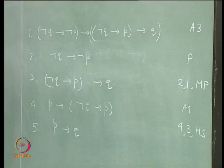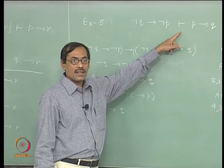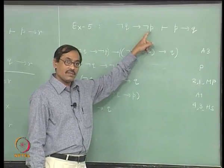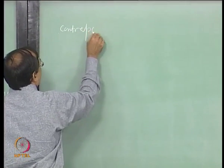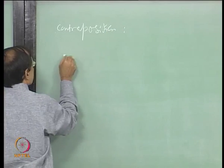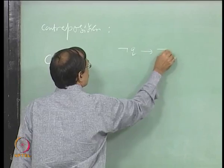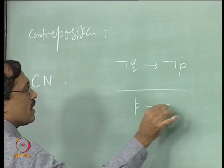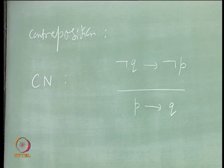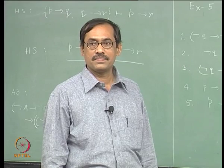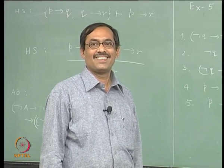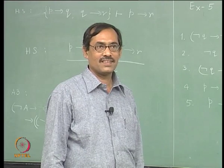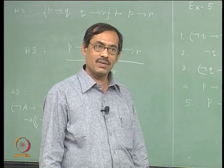If you want a proof without using HS, all you have to do is insert the proof of HS there, starting from this and then go on using it, finally concluding this. Now, once you get that this consequence is provable, you can say another inference rule from this. Let us write this as contraposition — CN — which says: from not q implies not p, therefore p implies q. Later, you can use this as a rule also if you need.